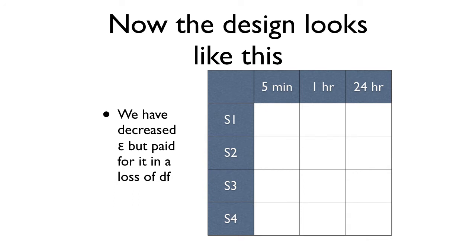So we've decreased epsilon. If we analyzed this design using traditional one-way ANOVA, the model would be X equals mu plus tau plus epsilon. But our new model is X equals mu plus tau plus pi plus epsilon. The only place pi can come out of is epsilon — it can't come out of tau, it can't come out of mu. So we're making epsilon smaller, which is good, because we're going to divide by that error term. When you divide by a smaller number, you get a bigger F. That's good.